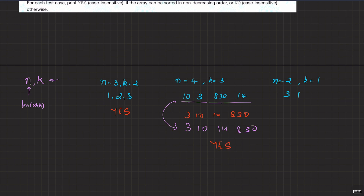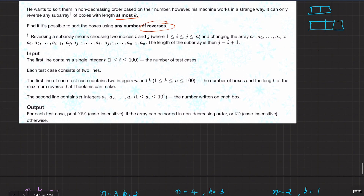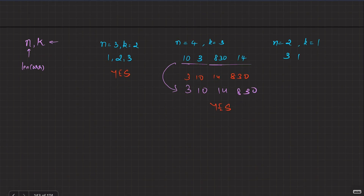One more example: n equals 2 and k is 1. If k is 1, it just means you cannot do anything to the array. So if k is 1, it's obvious — if the maximum size of the sub-array that you can reverse at a time is 1, then you cannot do anything. So in that case, it will print yes only if the array is already sorted. This is an important edge case. Since k can be at least 1 and at most 100, if k equals 1, the array has to be sorted.